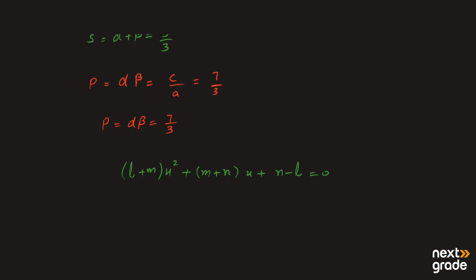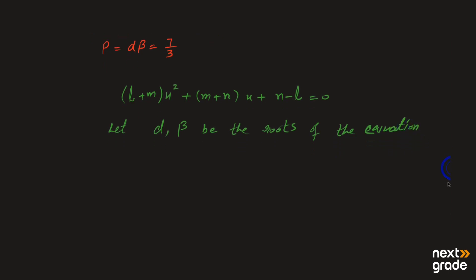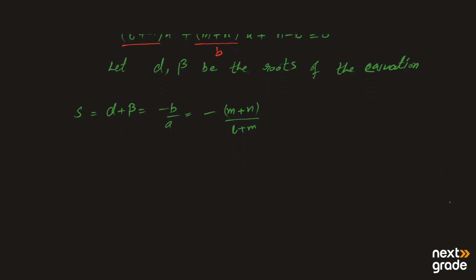تو ہم let کریں گے: let alpha and beta be the roots of the given equation. یعنی اگر ہم given equation کے roots alpha اور beta let کر رہے ہیں۔ تو sum اور product ہم نکال لیں گے۔ Sum of roots مطلب ہم ان کو add کریں گے۔ Sum of roots کا formula ہوتا ہے minus b over a، یعنی S = minus b over a. تو یہاں پہ b کی value کیا ہوگی؟ جو x کے ساتھ والا coefficient ہوگا، وہ b ہوگا — so b = (m + n).